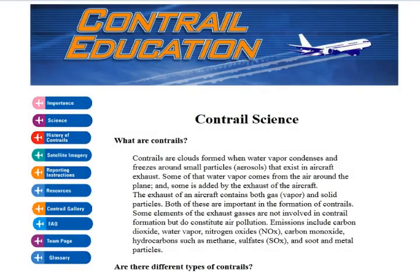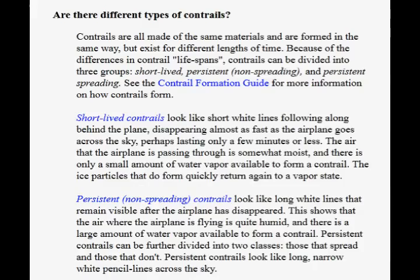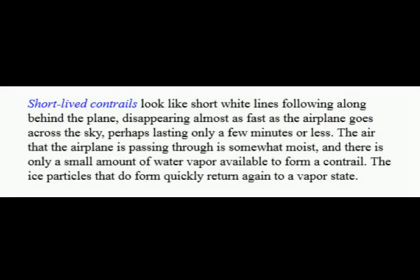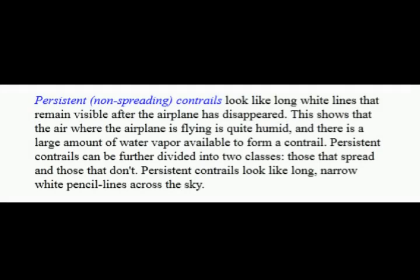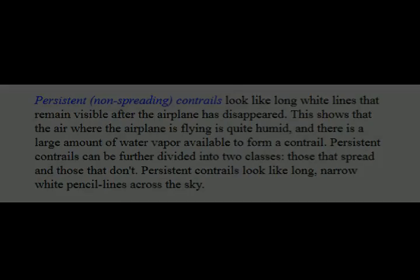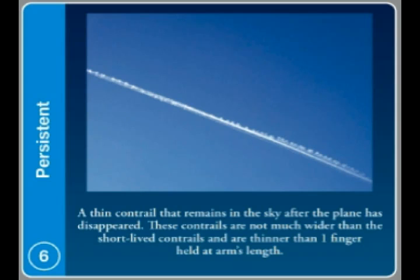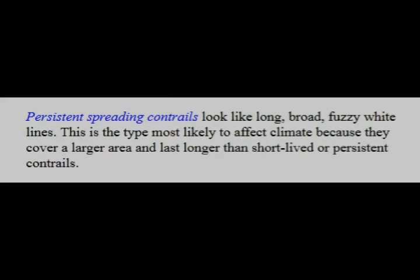Let's take a look at NASA's website to learn how to differentiate between three types of contrails. Number one, the short-lived non-persistent contrail. Number two, the persistent contrail non-spreading. And number three, the persistent contrail spreading.